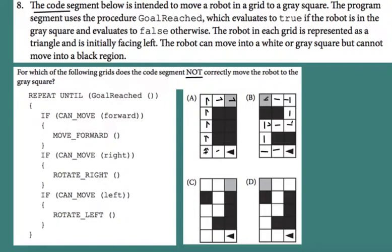Now answer C. The robot moves forward twice, then can turn right — so it turns right. Moves forward, moves forward again, can turn right again — turns right. Moves forward; it cannot turn right but can turn left — turns left. Moves forward twice. At this point, it checks if it can move right — yes — so it turns right. After turning right, it cannot turn left, skips that, goes back to move forward, and reaches the goal. Grid C works too.